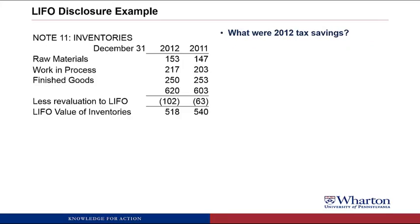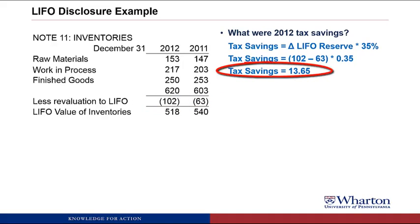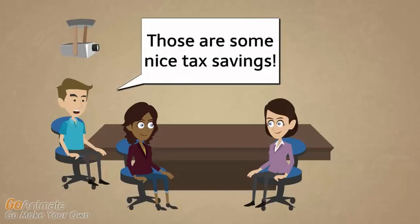The last question is how much did KP save in taxes in 2012 by using LIFO. The formula is: tax savings equal the change in LIFO reserve times the tax rate. The change in LIFO reserve is 102 minus 63, which is the $39 difference in cost of goods sold. Taking 39 times 35% gives us tax savings of $13.65 — and since those numbers are in millions, that's actually $13,650,000 in tax savings for KP during 2012. Those are some nice tax savings.